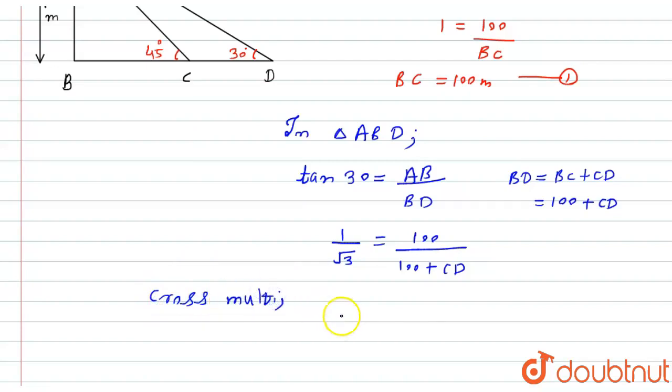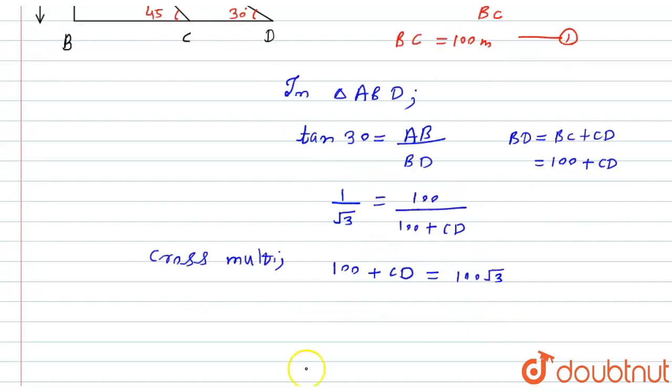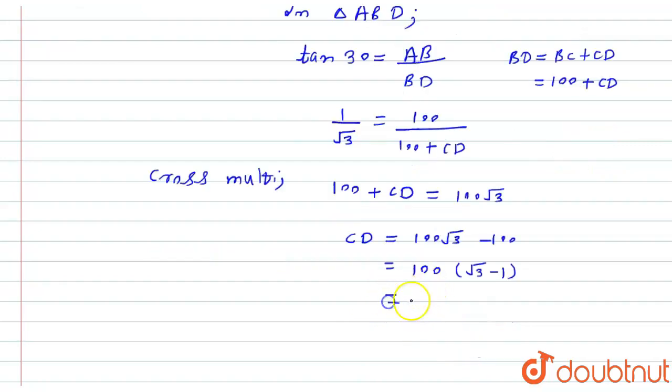After cross multiplication, I will get 100 plus CD equals 100 root 3. Now I will take the 100 to the other side, so CD will become equals to 100 root 3 minus 100. Now I will take 100 common from both of them, so it will become 100 times (root 3 minus 1). And after solving this, you will get the answer as 73.2 meters.